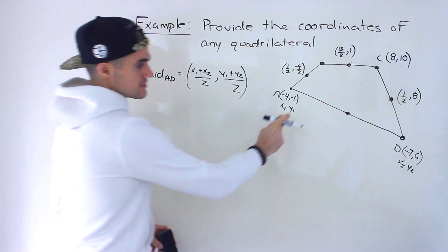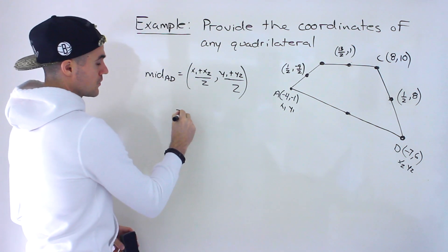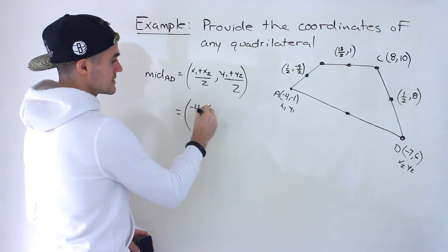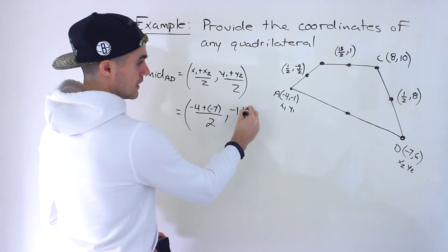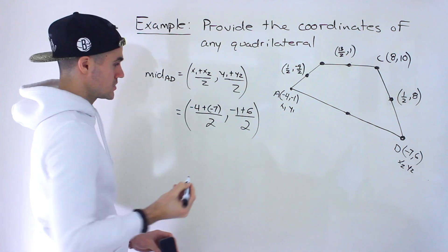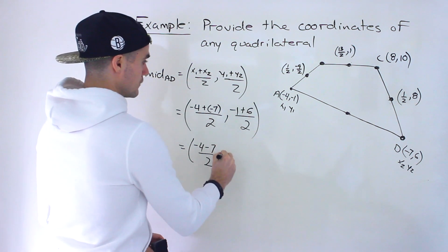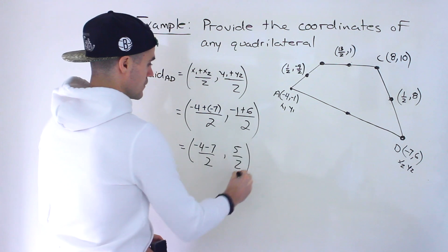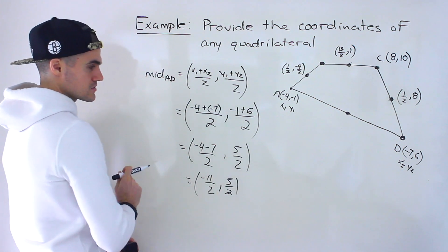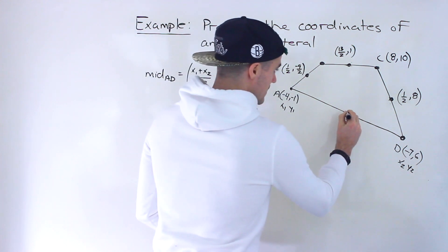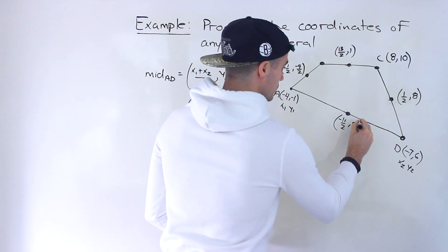All that's remaining is to find the midpoint of DA. We have D as X2, Y2 and A as X1, Y1. So X1 plus X2 is negative four plus negative seven over two, and Y1 plus Y2 is negative one plus six over two. Negative four plus negative seven is negative four minus seven, giving us negative eleven over two; and negative one plus six gives us positive five over two. So the midpoint of DA is (-11/2, 5/2).